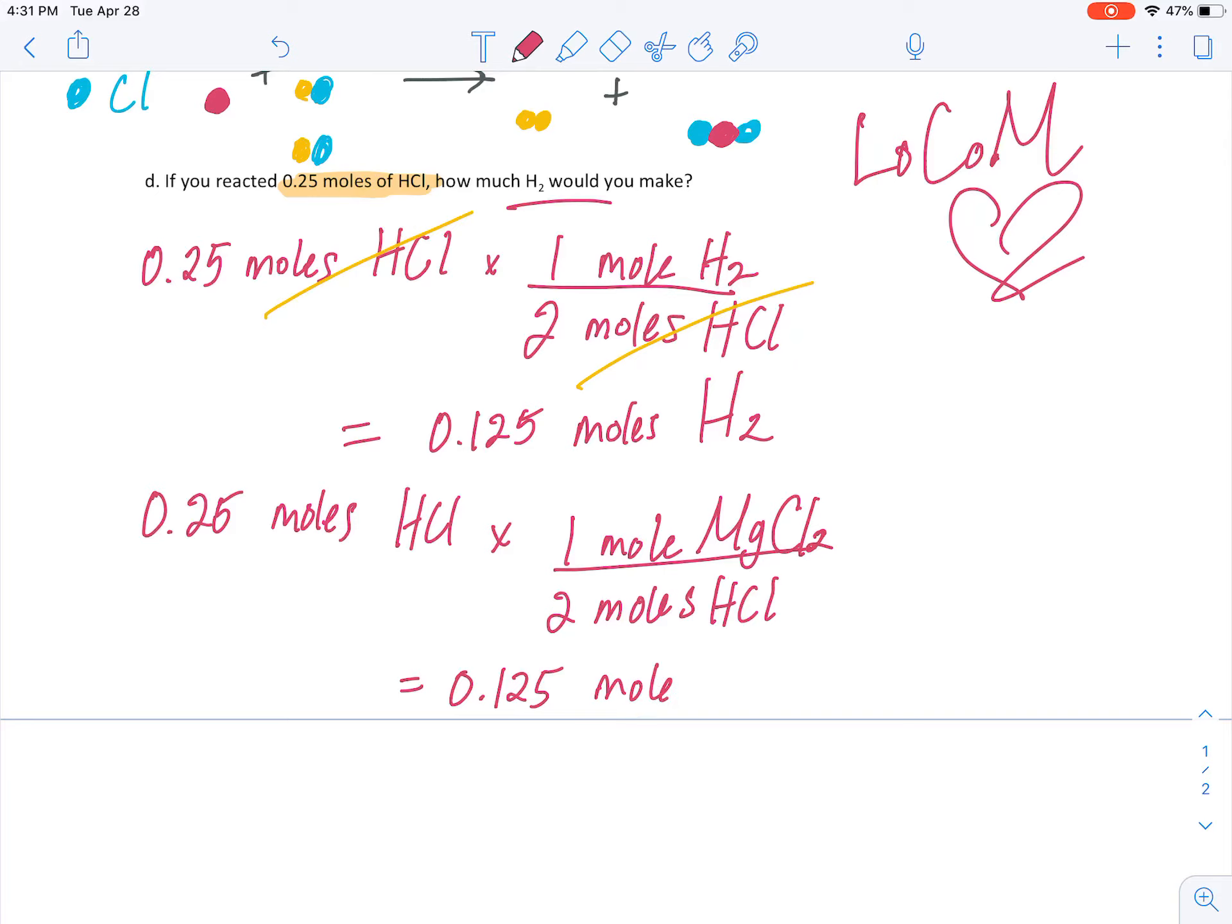So, the point of this warm-up is to show you that we can use moles in chemical reactions to convert from a reactant to a product, or from a product back to a reactant, knowing that the coefficients represent an ideal reaction, and that those coefficients can be substituted for a number of moles or particles to convert from one compound to another through your balanced chemical equation. So, we're going to continue to do this next week.